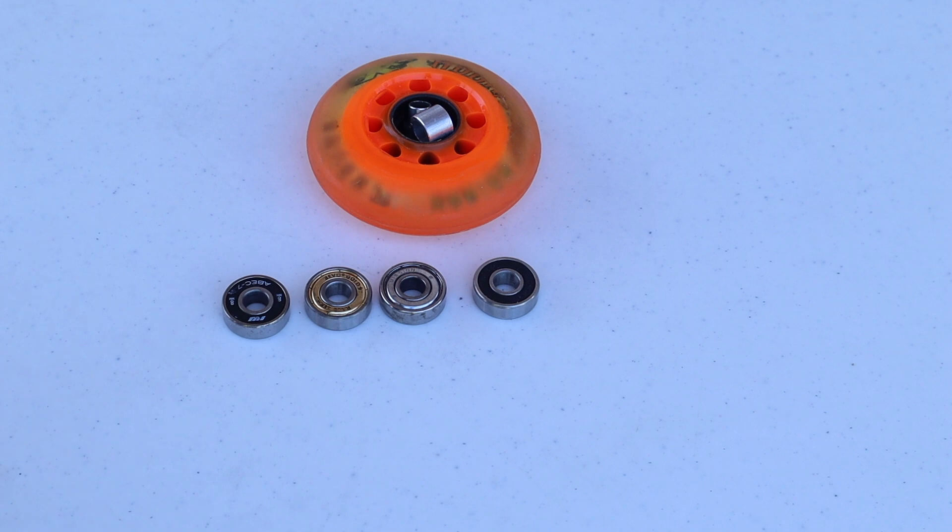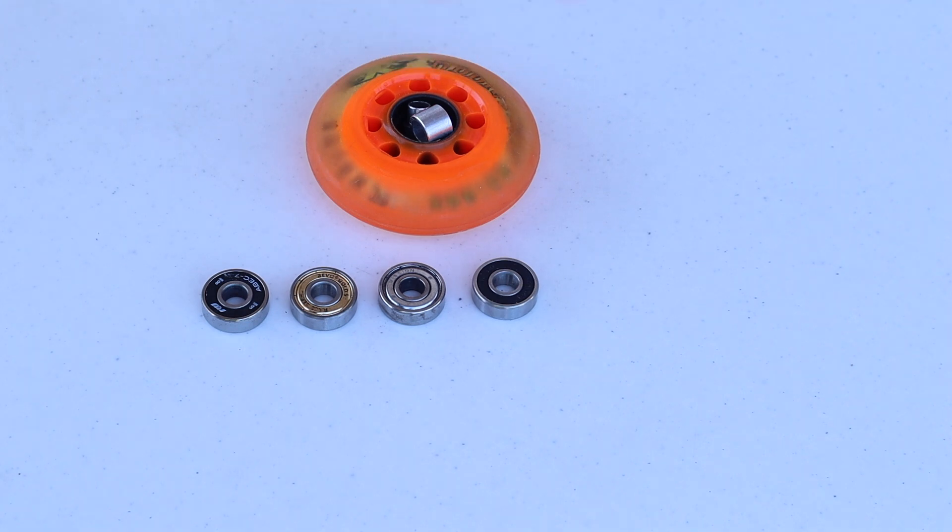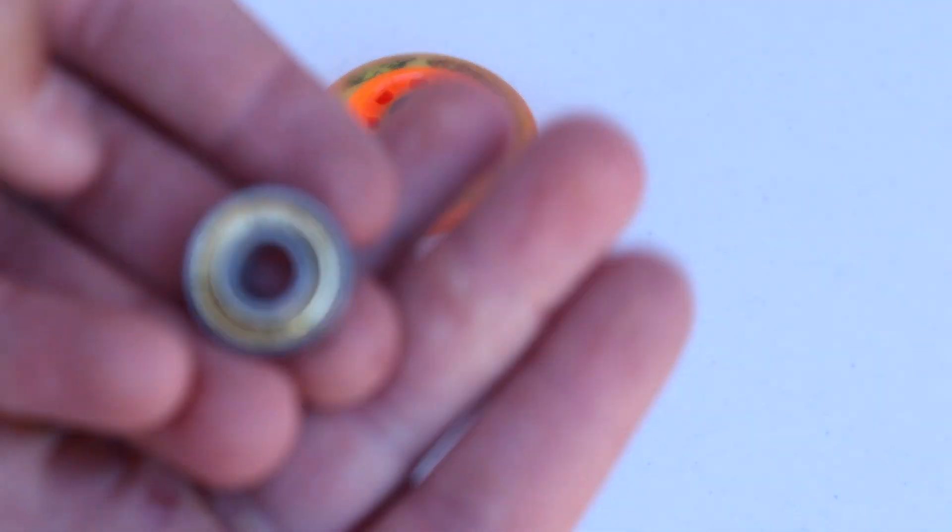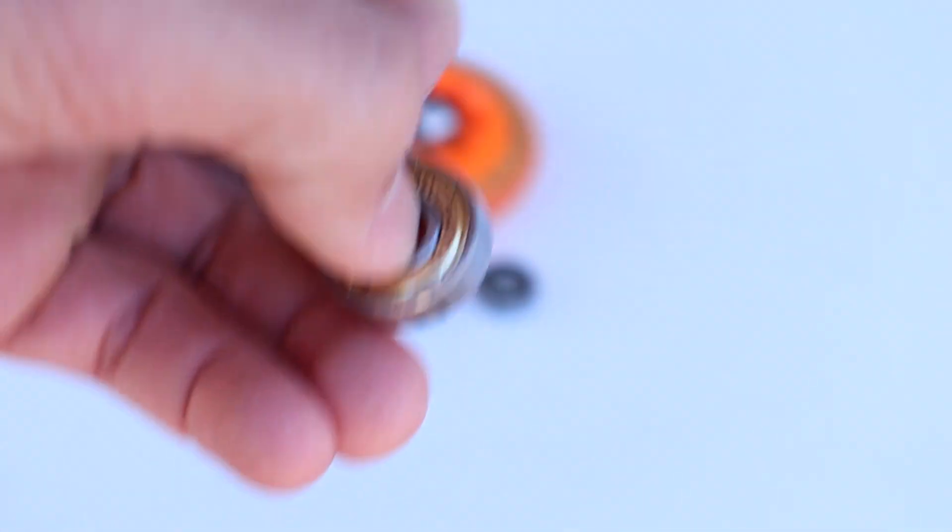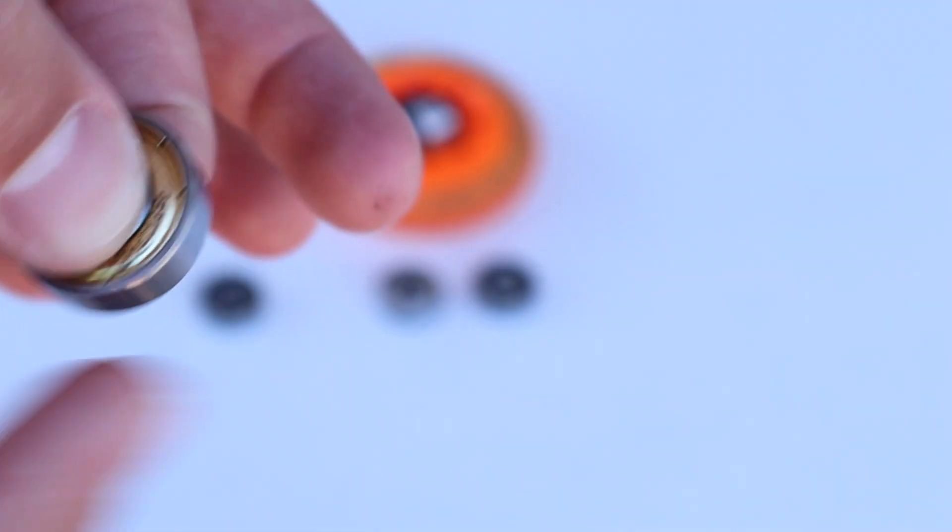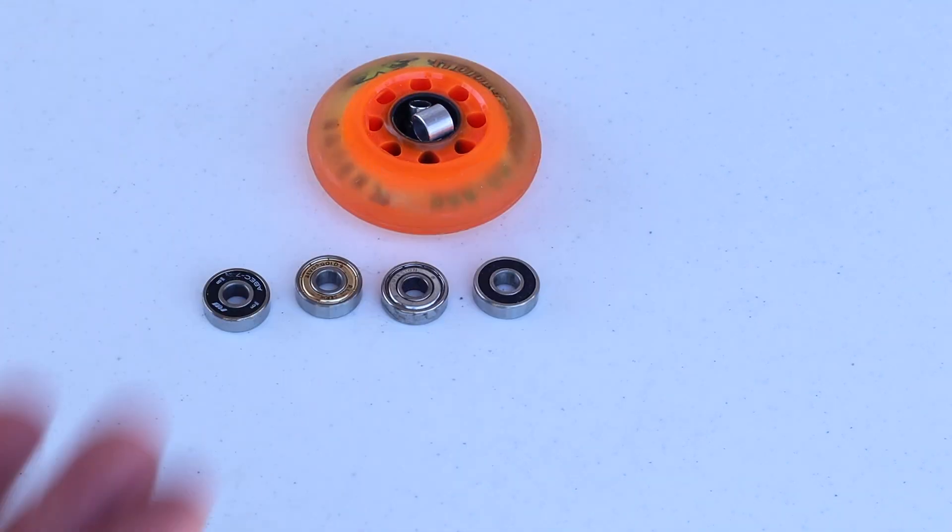Then we go up to ABEC 9s, and this is probably the most commonly used bearing in hockey skates, roller skates, that type of thing. This is a Tour Gold 9, Tour's own branded bearing product. They don't spin very good, but they're ABEC 9s. ABEC 9 is going to be your highest without going to Swiss, so this is probably going to be your best bang for your buck.